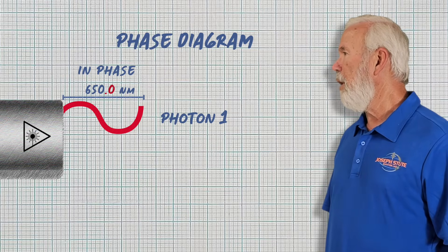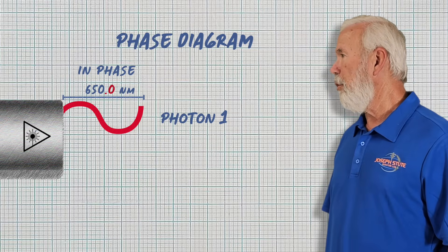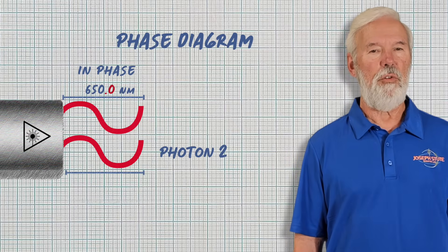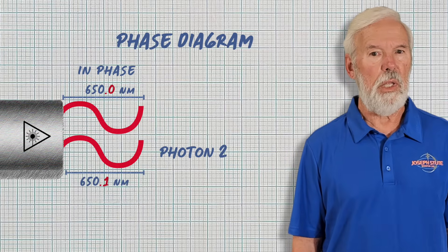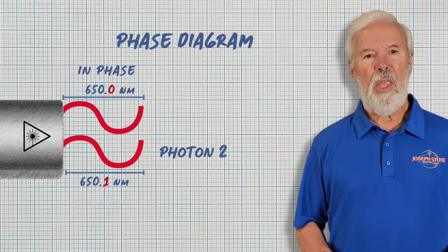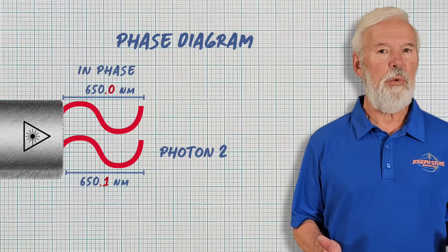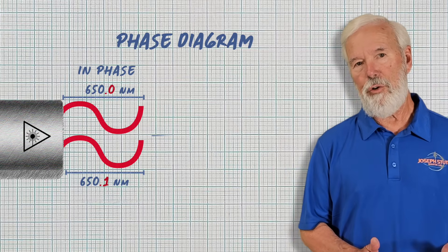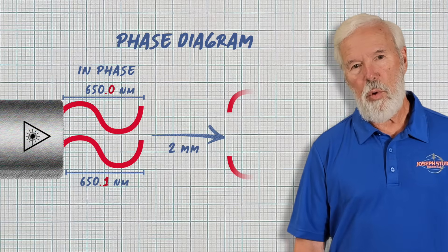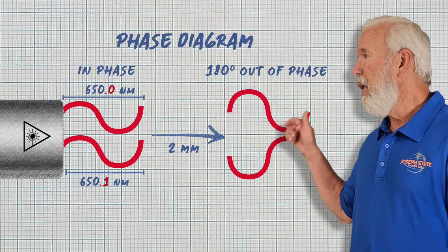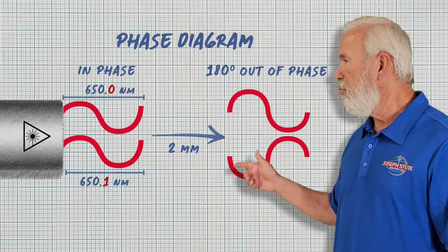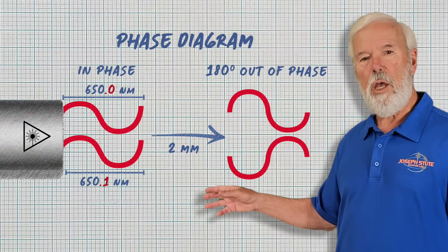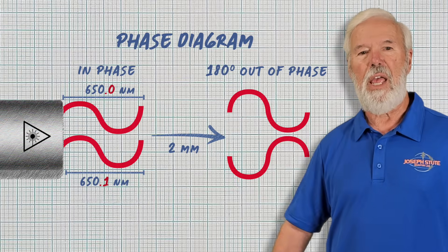Photon 1 has the wavelength of 650 nm. The difference in wavelength between the photons is equal to the diameter of a hydrogen atom. Very small indeed. Yet, in little more than 2mm, the two photons will be 180 degrees out of phase.